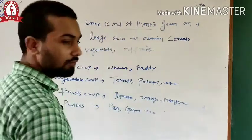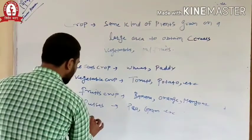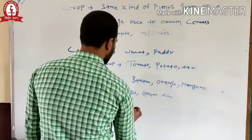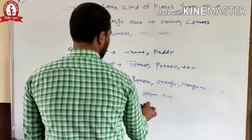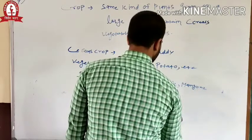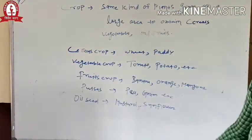We have some examples of oil seed like mustard, sunflower. So these are the examples of crops.